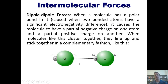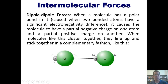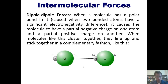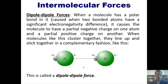For example, in hydrochloric acid, chlorine is much more electronegative than hydrogen, so it pulls the electrons toward itself, giving chlorine a strong partial negative charge and leaving hydrogen with a strong partial positive charge. When many HCl molecules are together, they line up so that the partially negative chlorines stick to the partially positive hydrogens. This dipole-dipole force gives HCl a relatively high boiling point compared to molecules with weaker intermolecular forces.